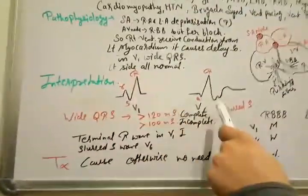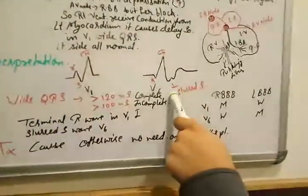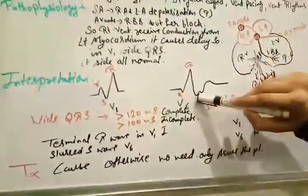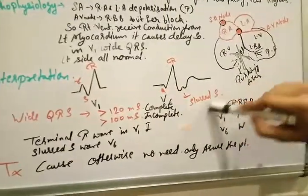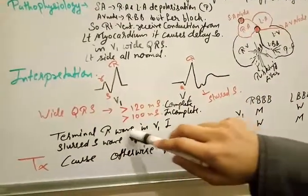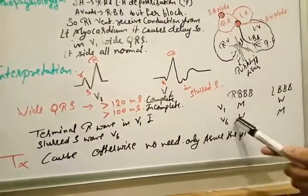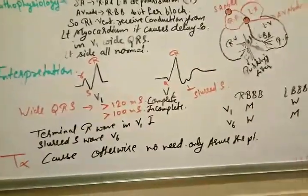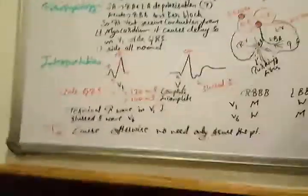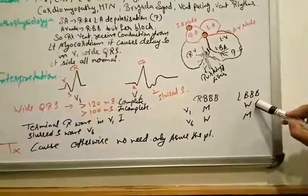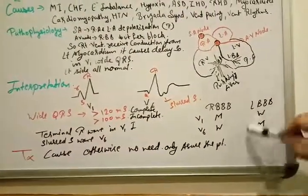But in case of V6 lead, we see the W pattern. This is looking like W with slurred S. Remember, slurred S in V6. So W pattern in V6 in case of right bundle branch. But in case of left bundle branch it is reversed, vice versa - W in V1 and M pattern in V6.